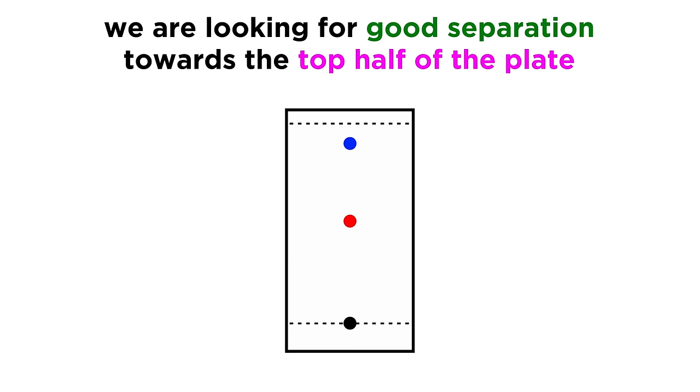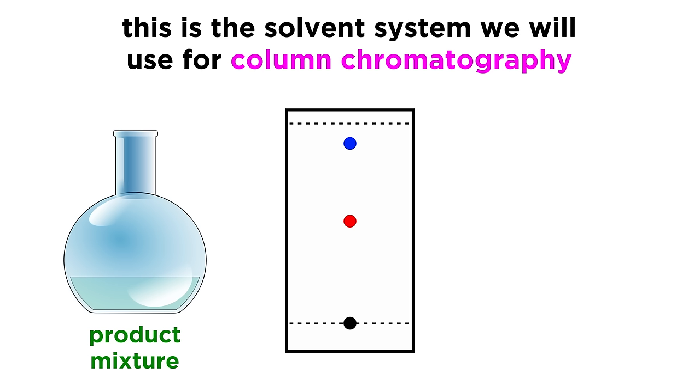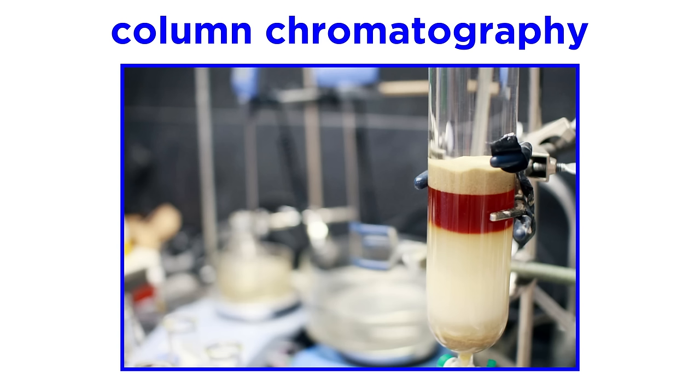The ideal solvent system will result in something like this, where the two components are separated very well, one of them towards the top of the plate, and the other more near the middle. This solvent system will be ideal for column chromatography, which is the technique that we will use to actually physically separate all of the contents of our reaction flask, once the reaction is complete and the organic products have been extracted. This is an extremely important technique for any organic chemist, so let's move forward and learn about that next.